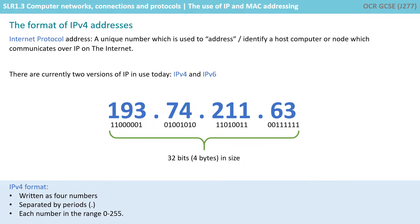So let's turn our attention back to IP addresses and look at them in a little more detail. An IP address is essentially a unique number which is used to address or identify a host computer or node which communicates over IP on the internet. There are actually two versions of IP in use today: IP version 4 and IP version 6.